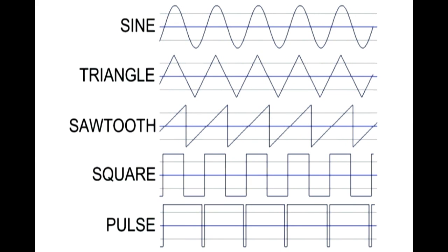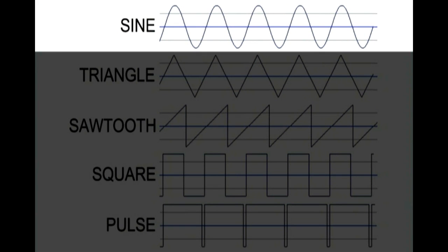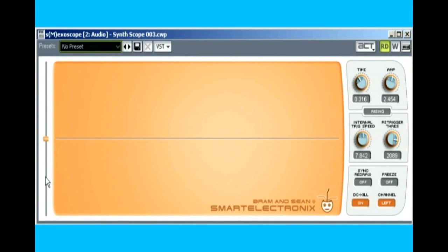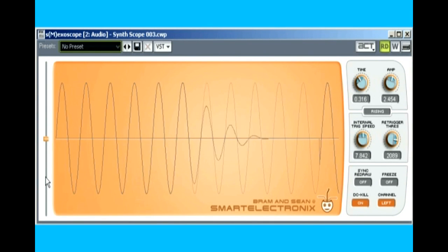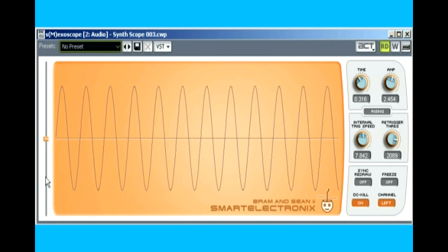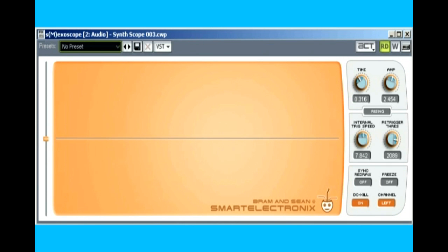All static waveforms contain one or more frequencies. The simplest wave type is a sine wave, which contains only one frequency — a fundamental pitch. Without any harmonics to add character, the sound is pretty boring. We can vary the volume over time, but it's still not very interesting.